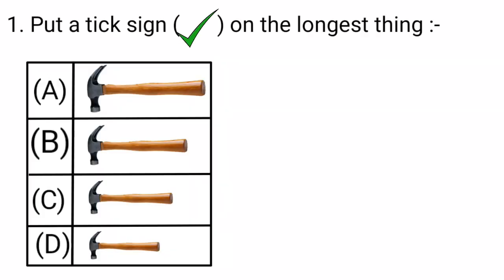Our first question is: put a tick sign on the longest thing. Here we are given 4 hammers A, B, C, and D of different lengths. Let's compare their lengths.